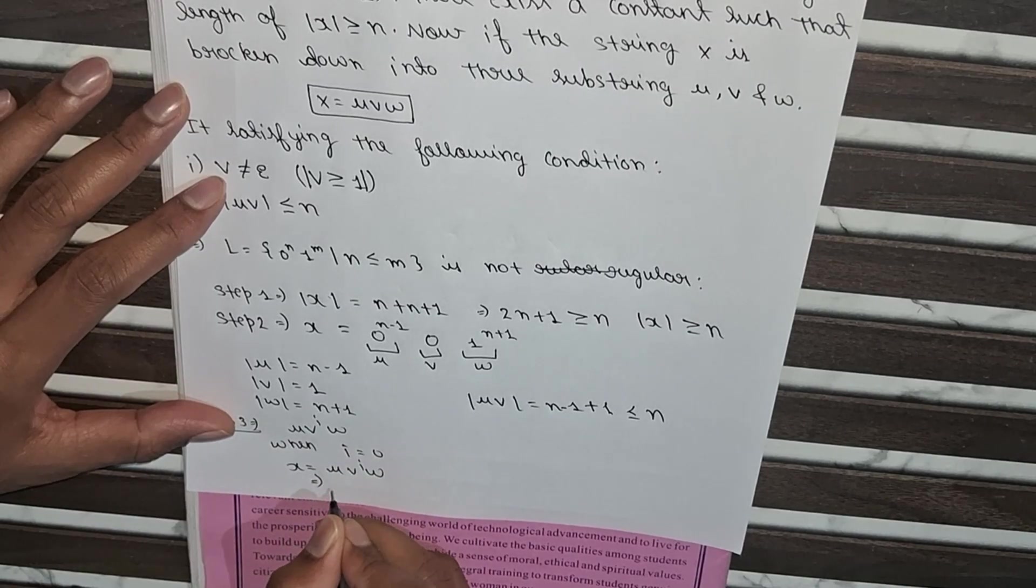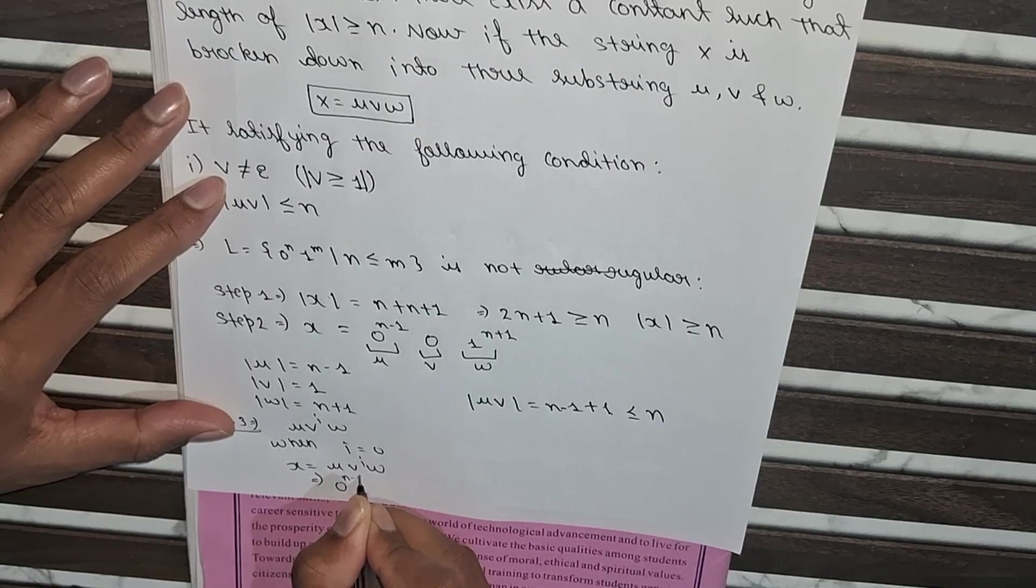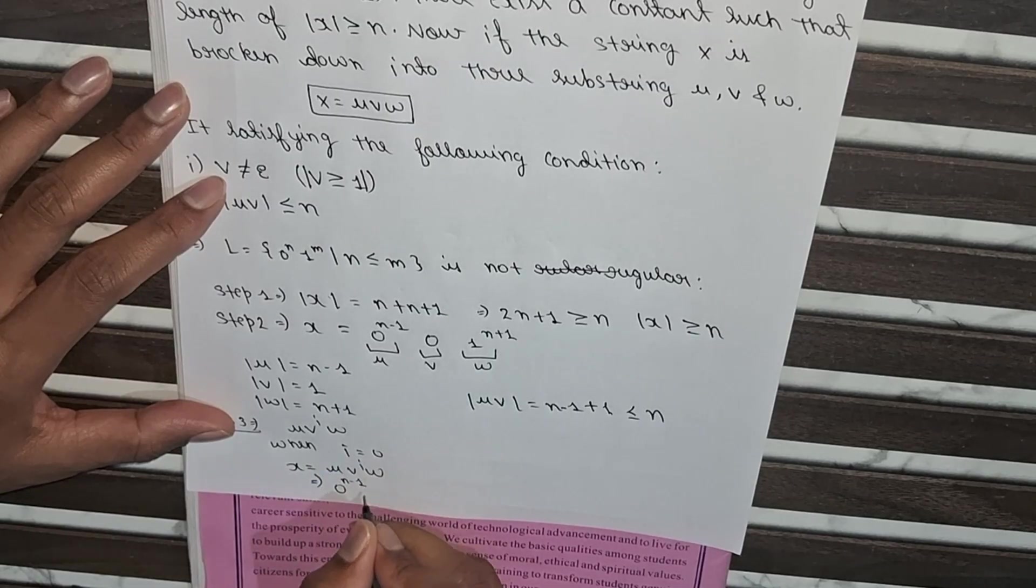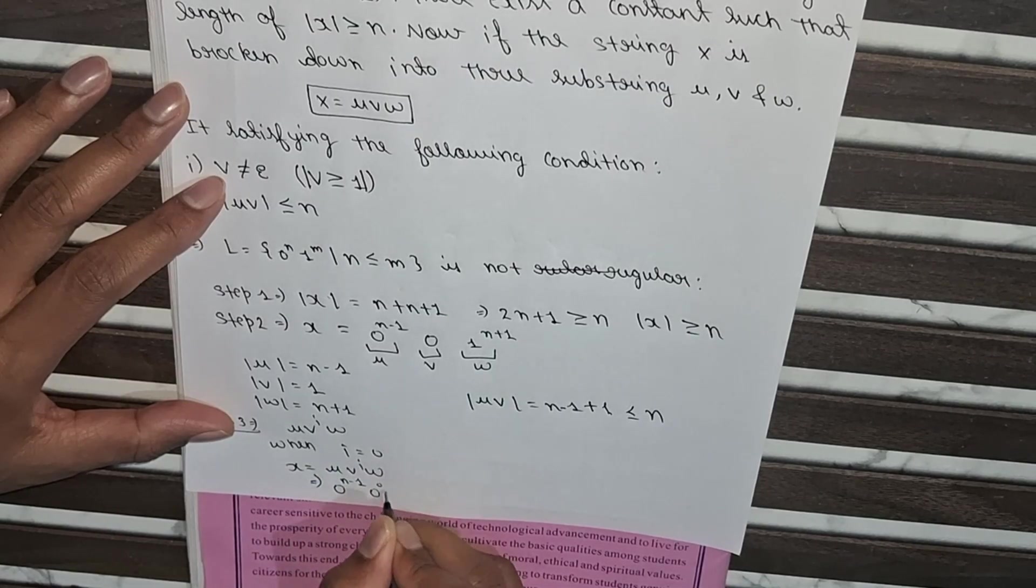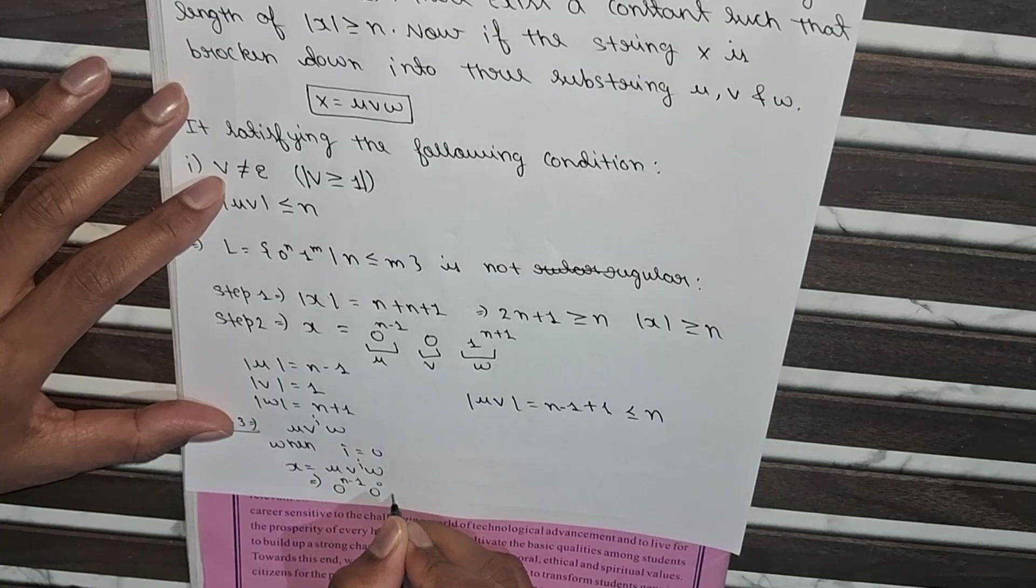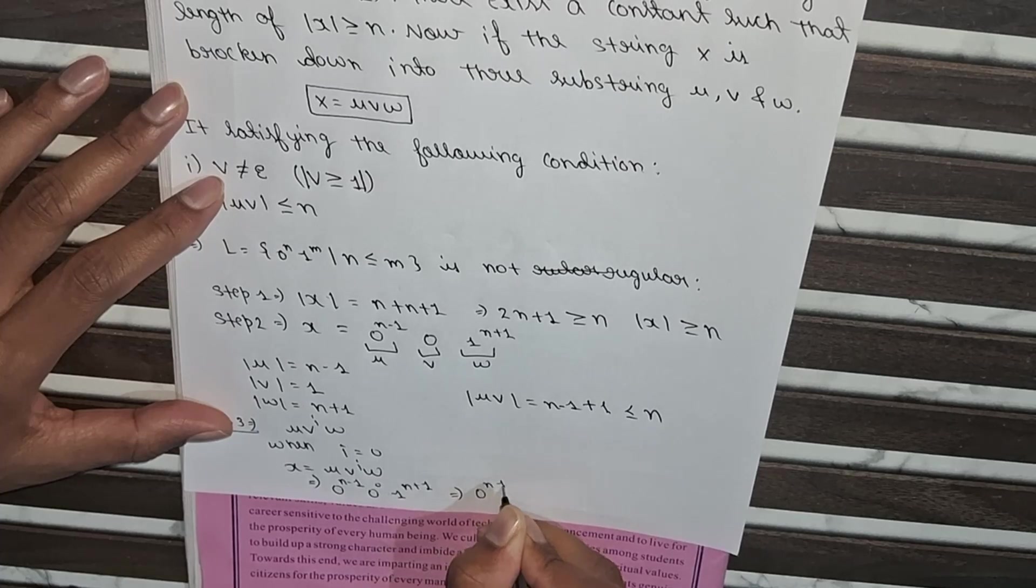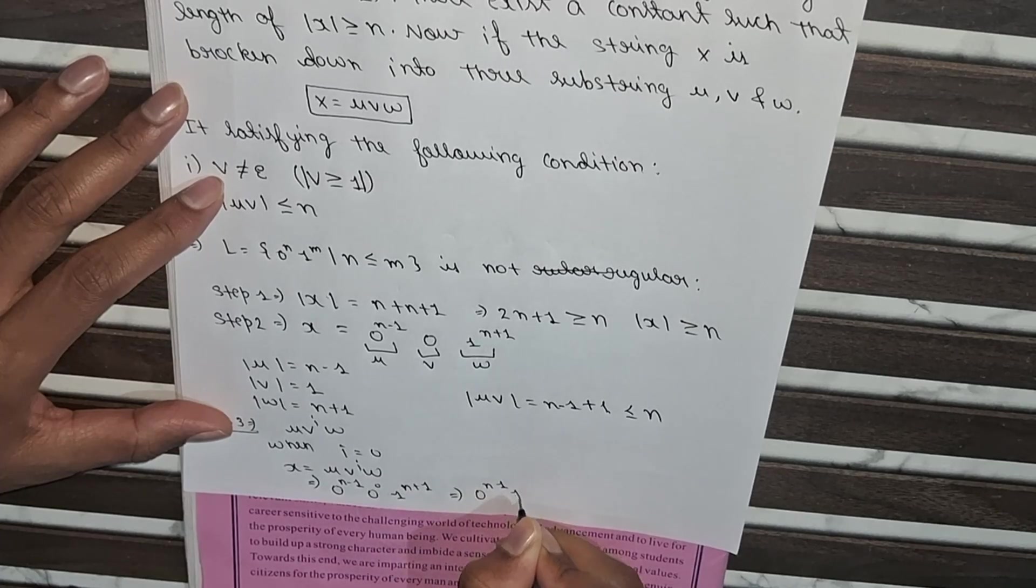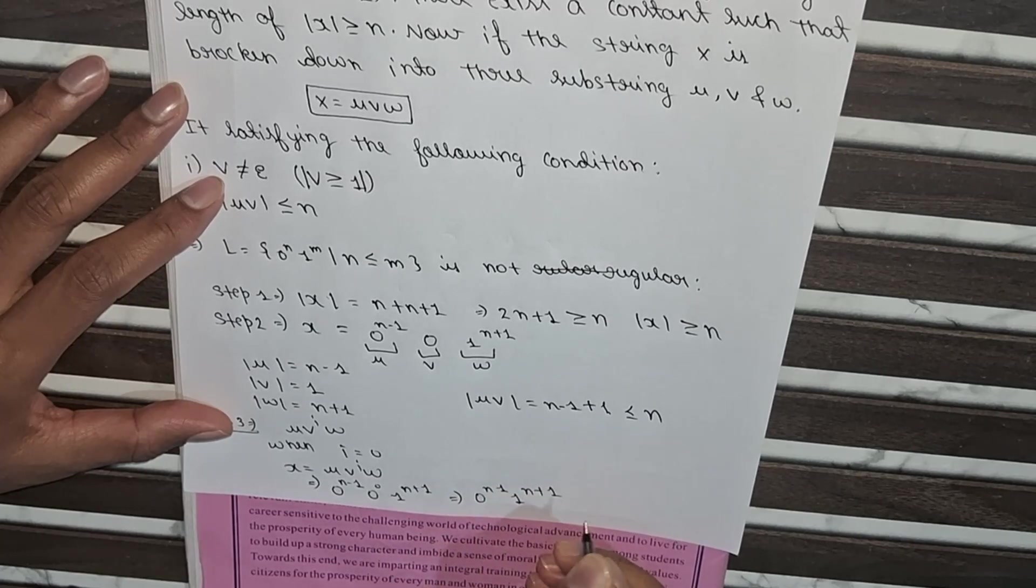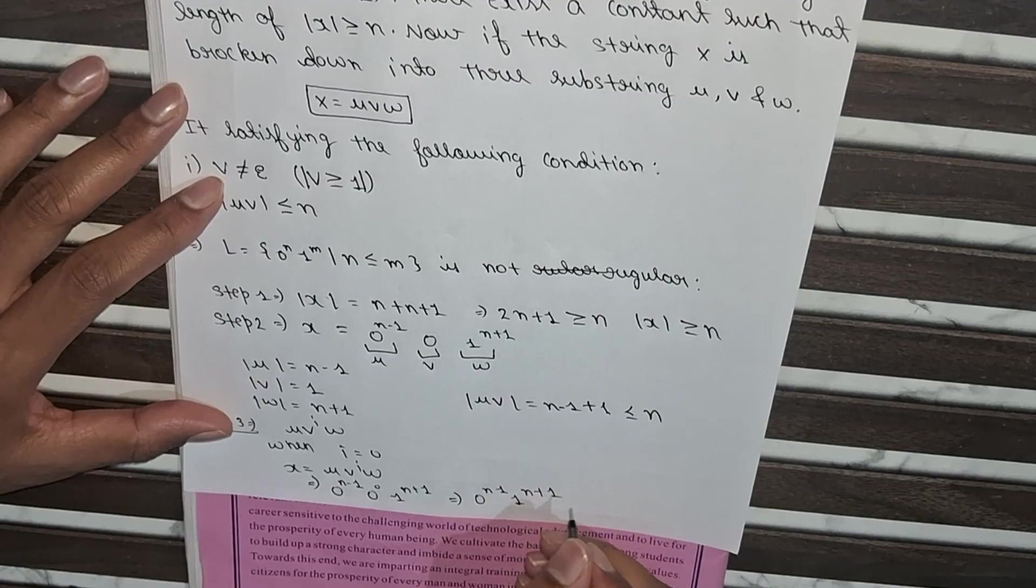So here we will put the values 0 to the power n minus 1. Here v to the power i is equal to 0, so 0 to the power 0 and w, w is nothing but 1 to the power n plus 1. So it will be equal to 0 to the power n minus 1 times 1 to the power n plus 1, which still belongs to the language given here.